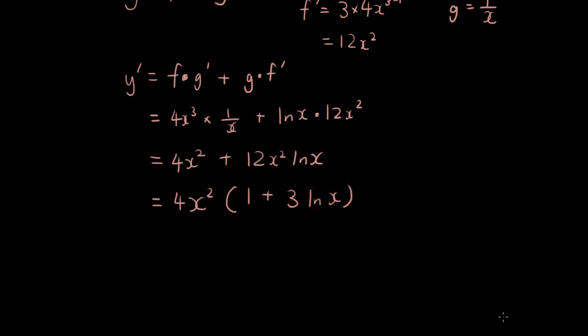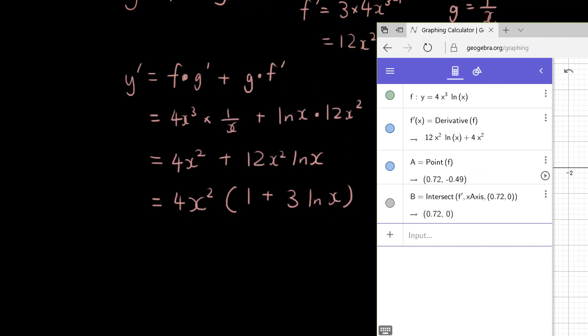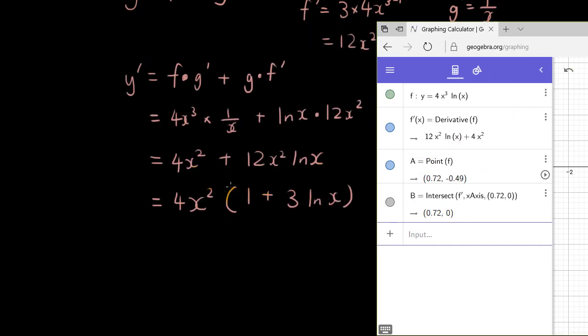And let's try and match that up with what we have in GeoGebra. 12 x squared ln x plus, so that's basically the same, right? They didn't factorize it like we have. It's actually good practice to factorize things. So that is our answer.